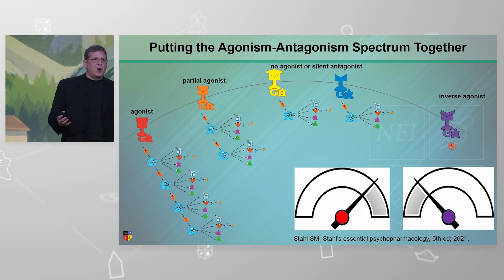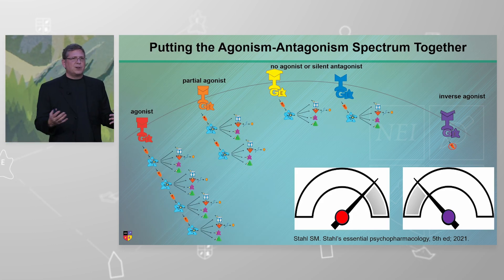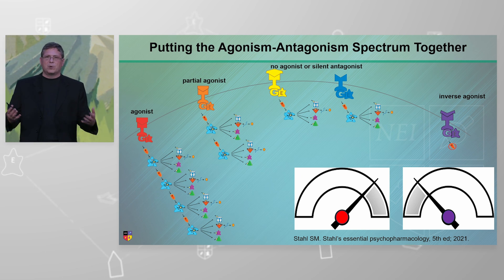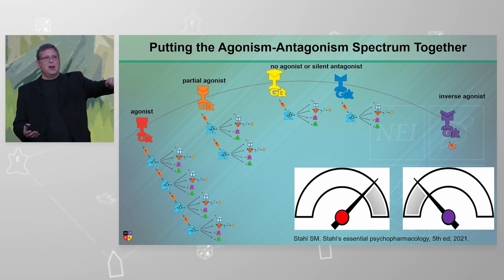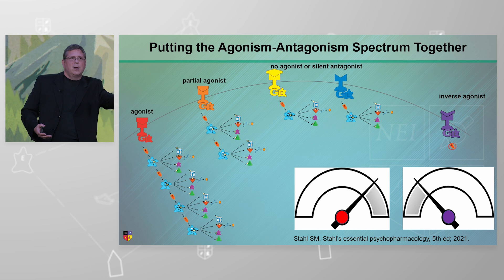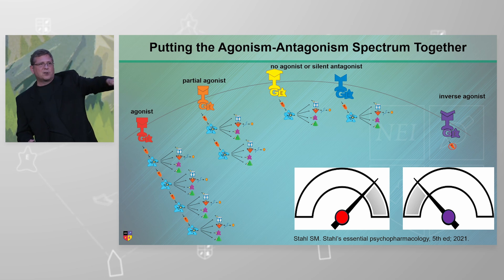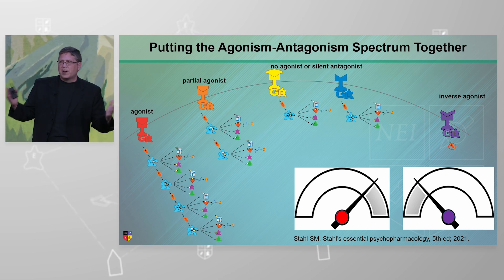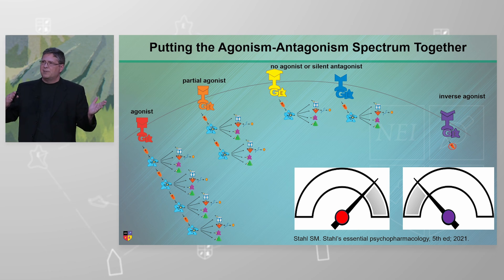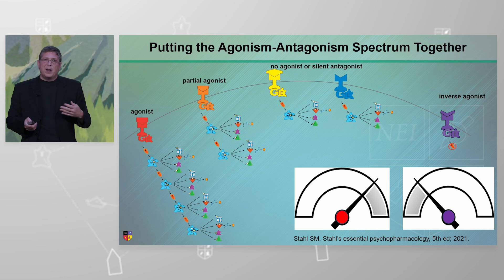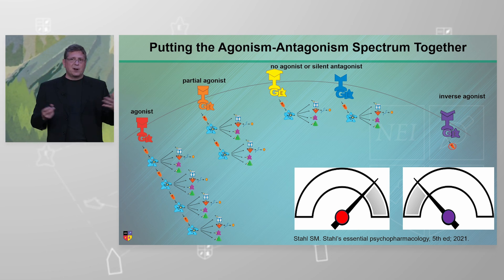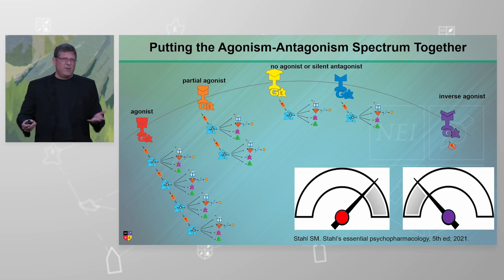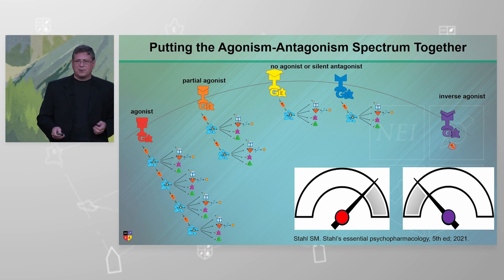So we have a spectrum. Researchers build medications that can go to a certain serotonin receptor — does it turn it way up, turn it a little up, or turn it down back to normal? So we can pick and choose how much we want to dial in. We don't have many inverse agonists — if you're taking a board exam, an inverse agonist does lower activity to zero. We don't have many of those in psychiatry.